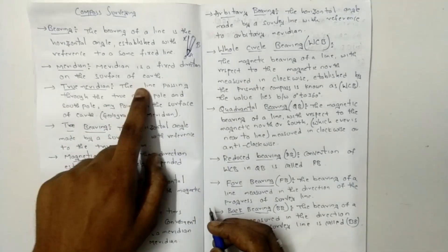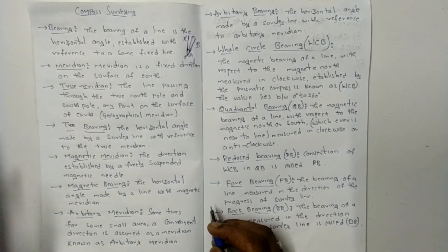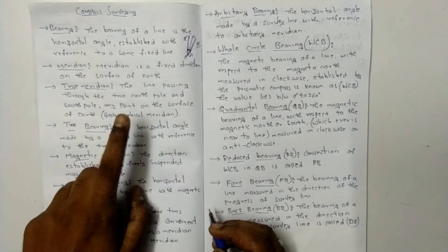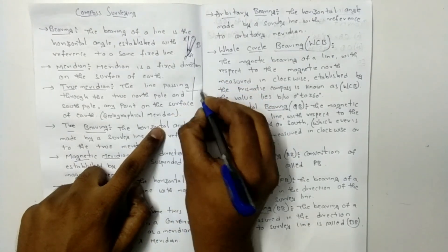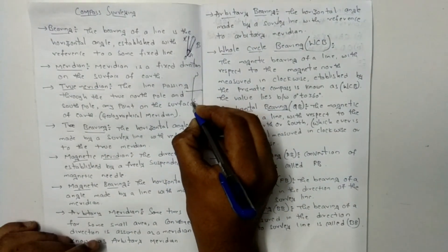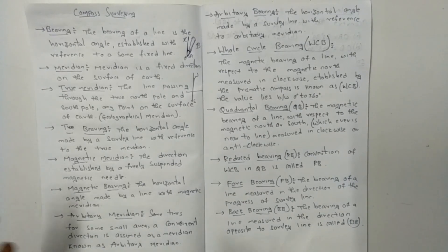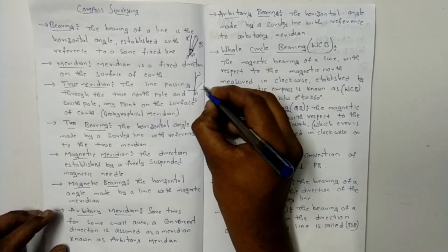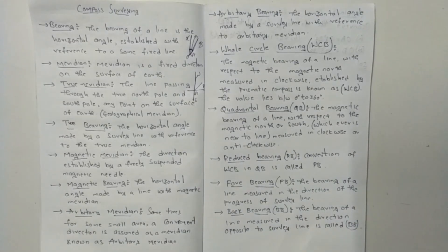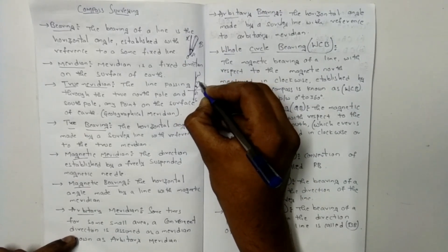The true meridian is the line passing through the true north pole and south pole at any point on the surface of the earth. This is called the true meridian or geographical meridian. The horizontal angle between the true meridian and a line is called the true bearing.